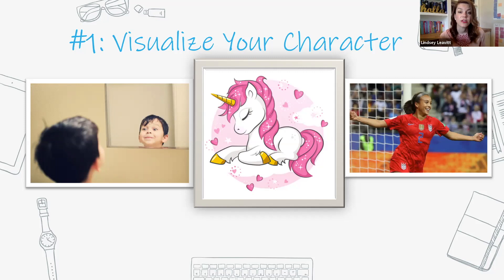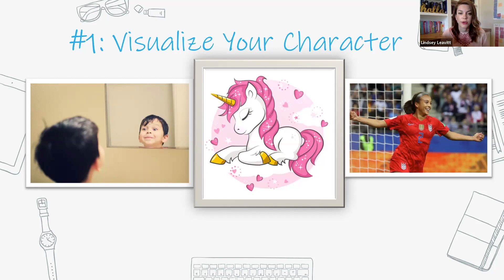You can write about somebody you admire, or something fictional — which we all know is not a unicorn, but some people might say that. As we're writing about this character, just get down the first things that pop into your head. Robin and I are going to do this activity ourselves. You can do it on your Google doc or a piece of paper. Let's go for 15 seconds — quickly pick a character and jot things down.